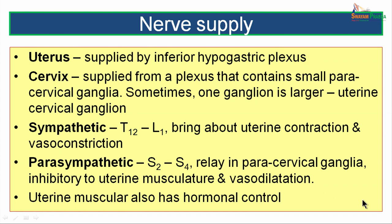The nerve supply of the uterus: it is supplied by the inferior hypogastric plexus. The cervix is supplied by a plexus containing small paracervical ganglia — sometimes one such ganglion is larger and called the uterine cervical ganglion. The sympathetic nerve supply is from spinal segments T12 to L1, bringing about uterine contraction and vasoconstriction. The parasympathetic supply is from spinal segments S2 to S4, relaying in the paracervical ganglia; they are inhibitory to uterine musculature and cause vasodilatation. The uterine musculature also has hormonal control.